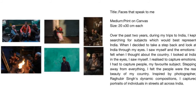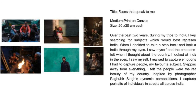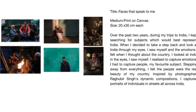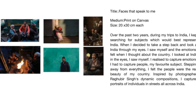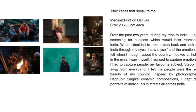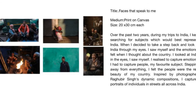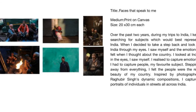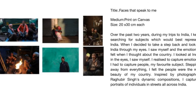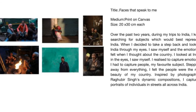Over the past two years, during my trips to India, I kept searching for subjects which would best represent India. When I decided to take a step back and look at India through my eyes, I saw myself and the emotions I felt when I thought about the country. I realized that to capture emotions, I had to capture people — my favorite subject. Stepping away from everything, I felt that people were the real beauty of my country. Inspired by Raghu Bir Singh's dynamic compositions, I captured portraits of individuals in streets all across India, exploring unique compositions and playing with light and shutter speed.